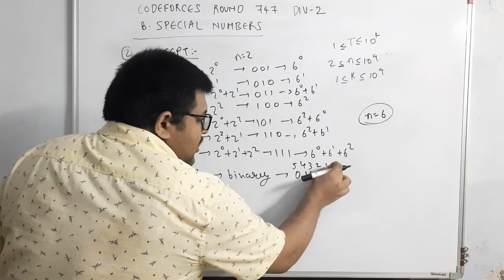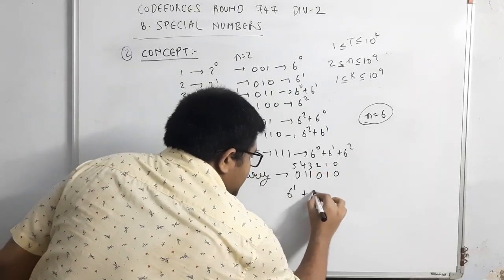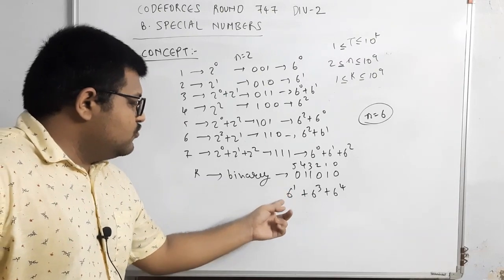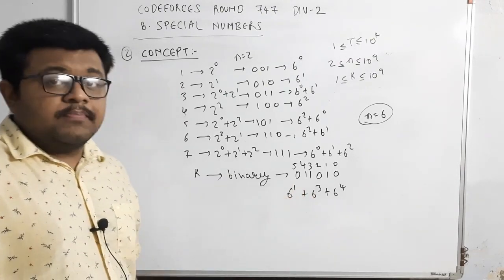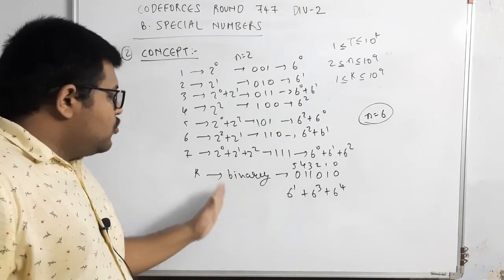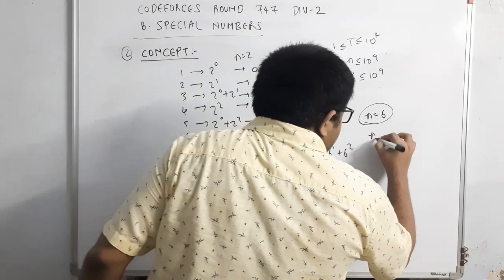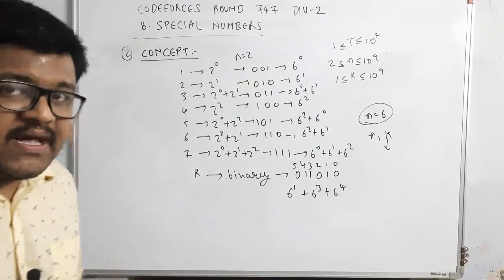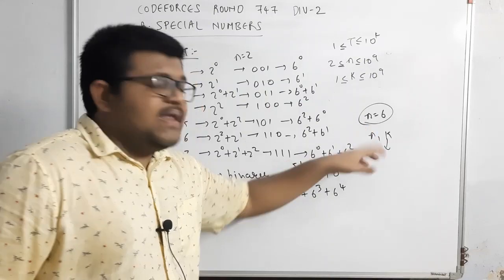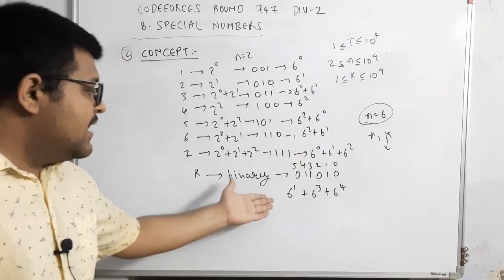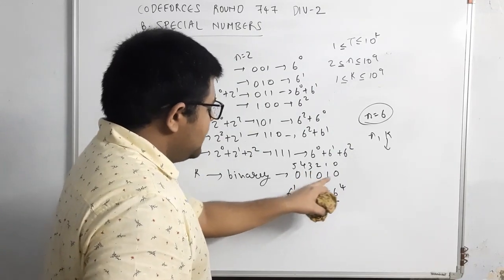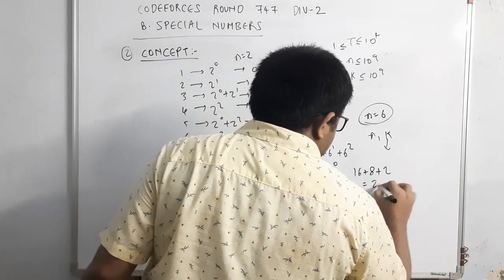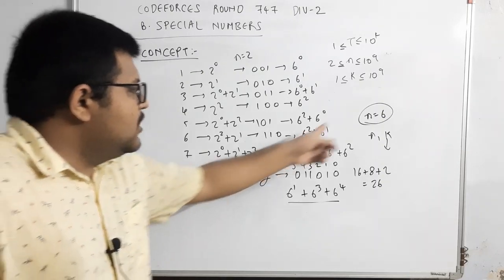The key insight is: just look at which bits are set in the binary representation of k. For example, if k=26 (binary: 11010), the bits set correspond to powers 1, 3, and 4. So the answer for n=6 would be 6^1 + 6^3 + 6^4. We represent k in binary and wherever a bit is set, we replace that power of 2 with the corresponding power of n to get our answer.